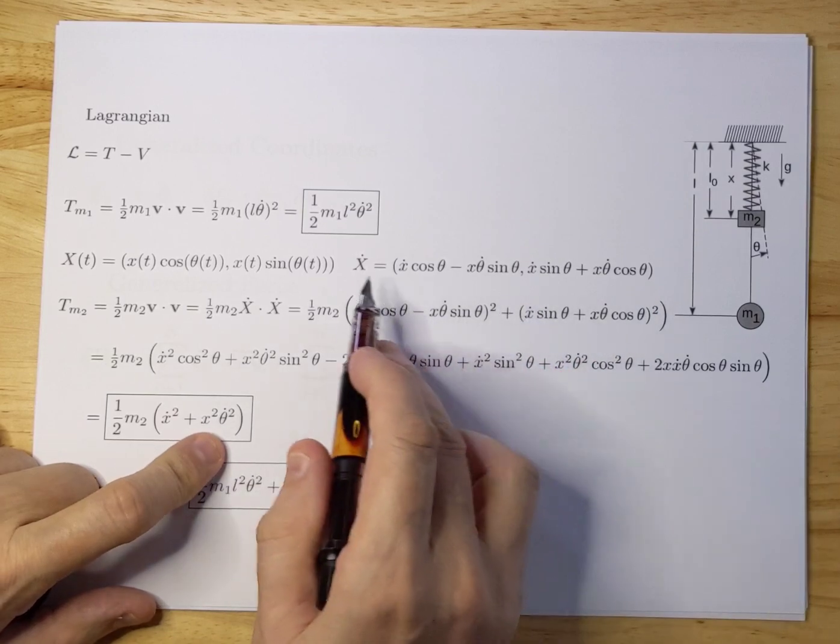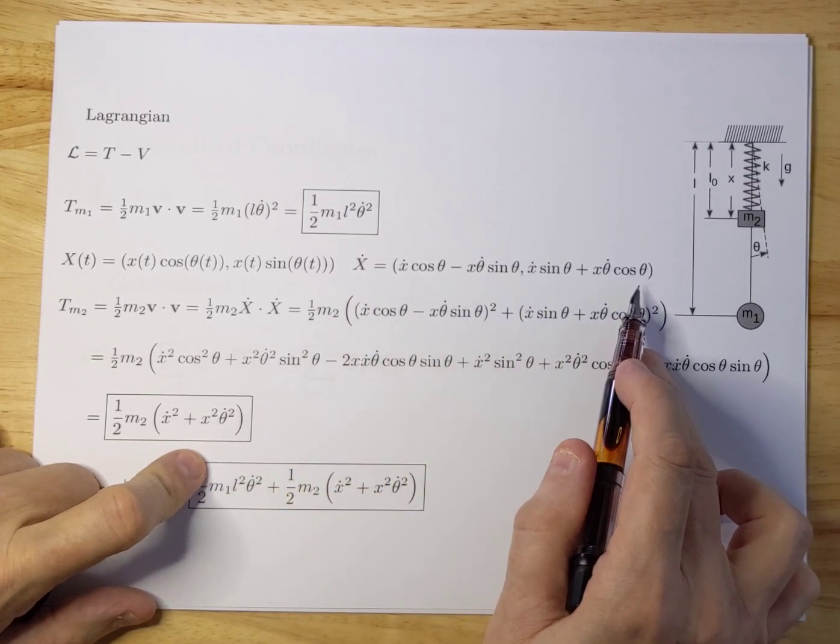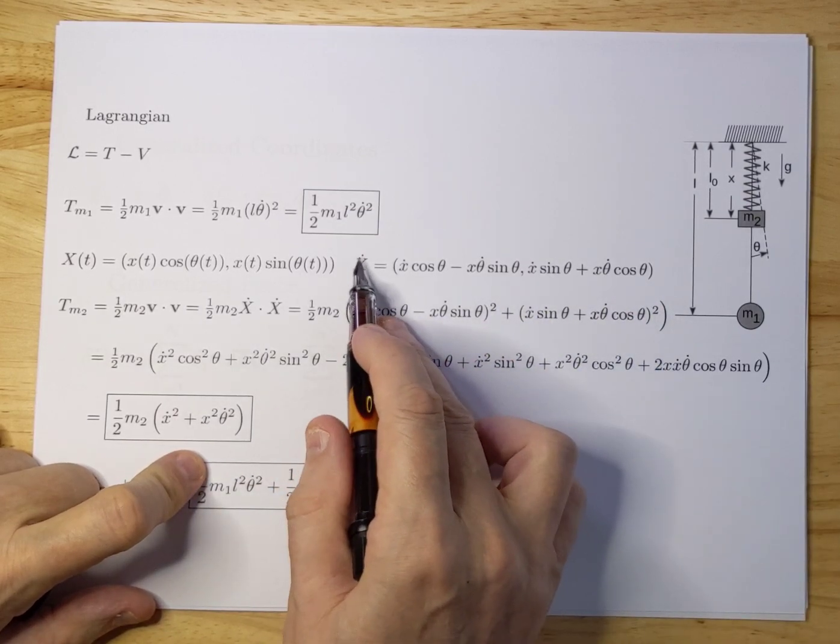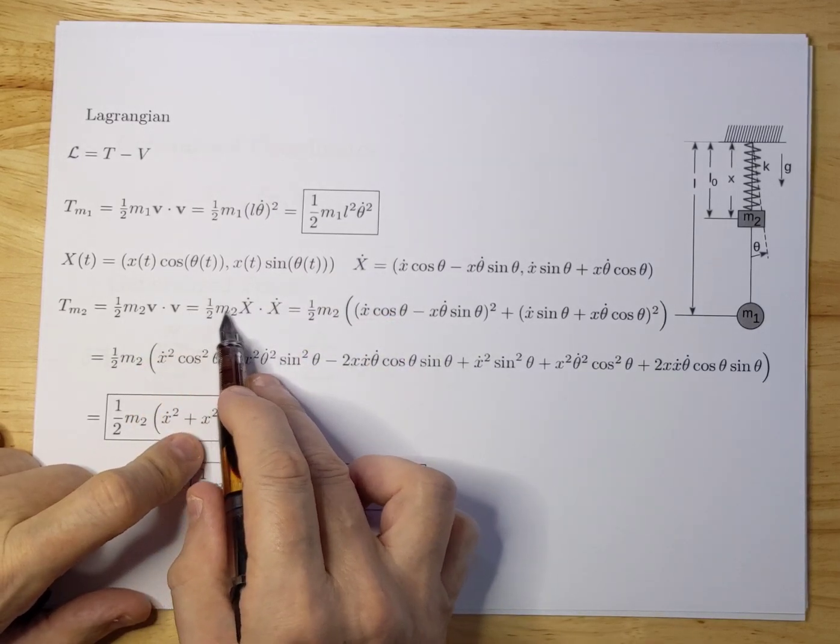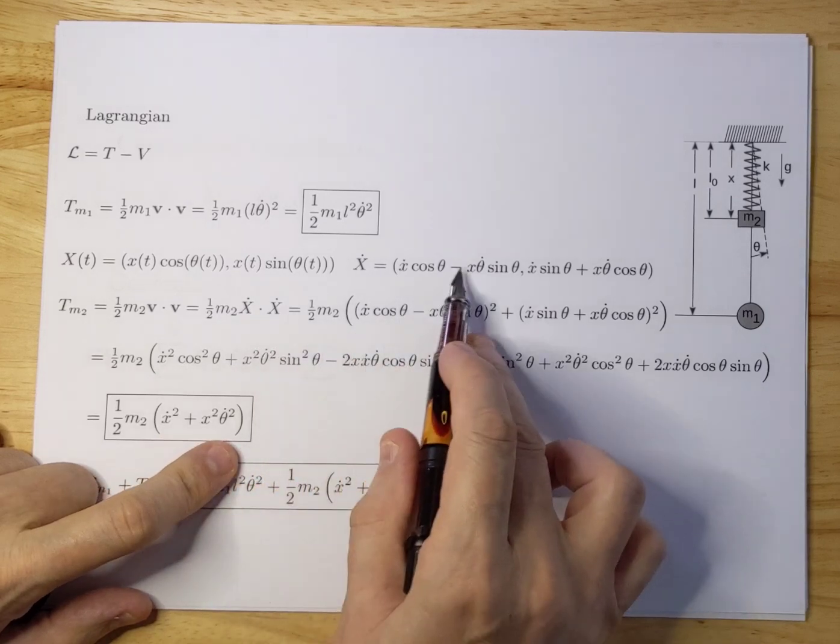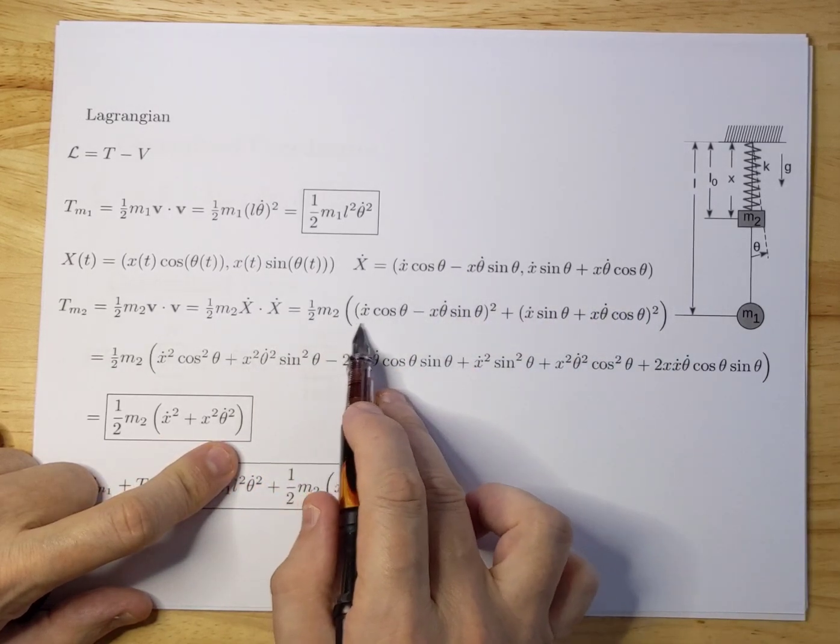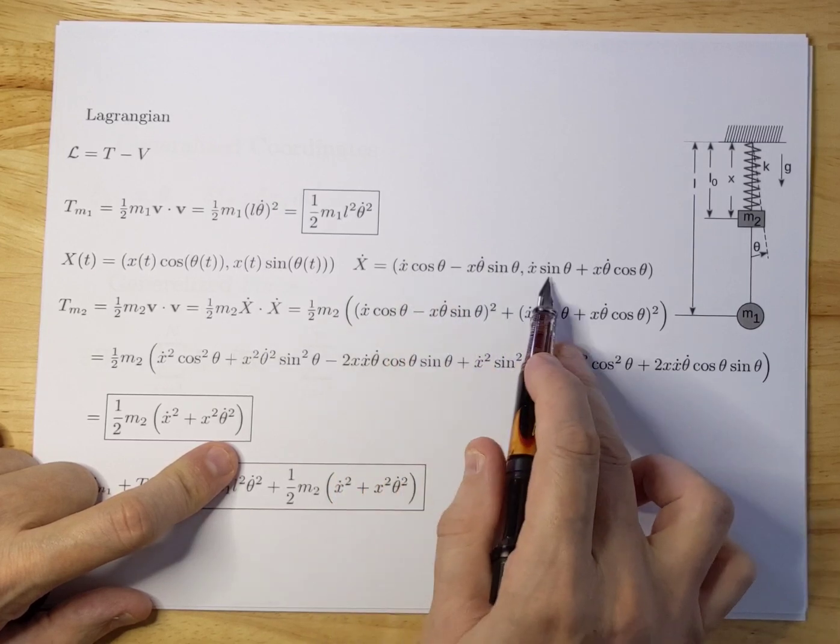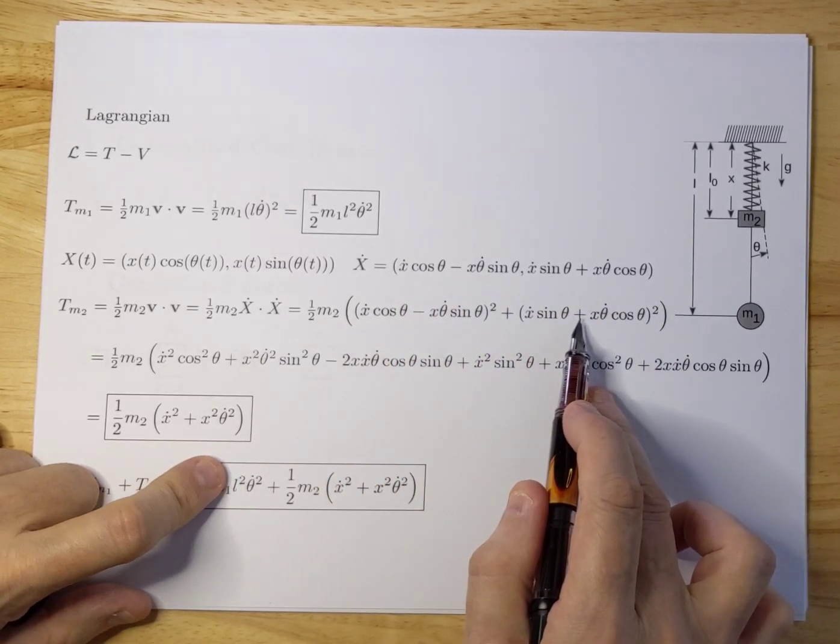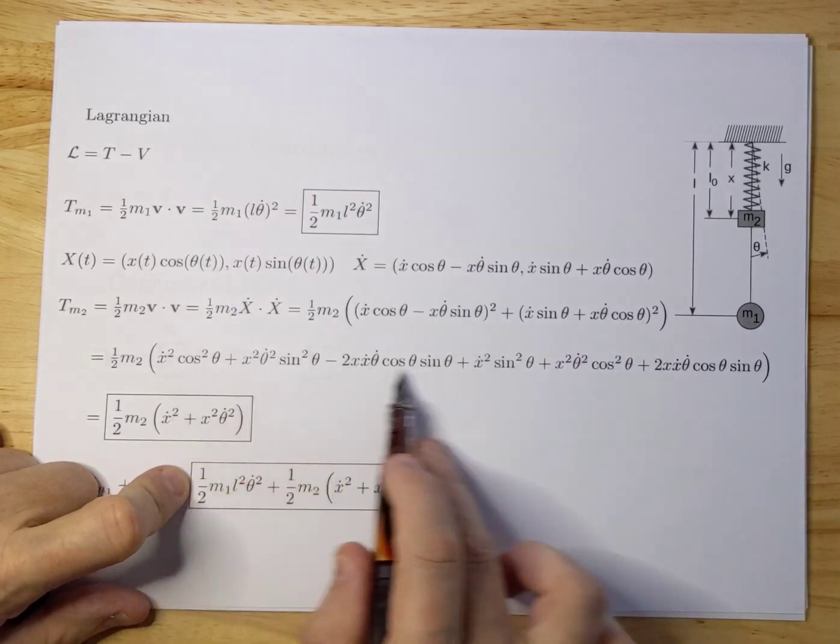Now we can square this because this is a speed term. So again we go half M2 V squared which is half M2 X dot times X dot. We work out this form times itself, squaring each term and working that all out.